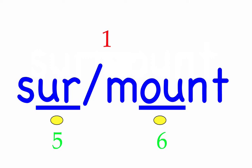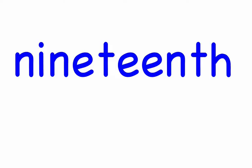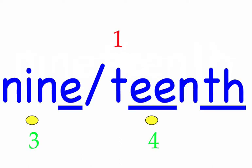Row seven. Nineteenth. Today is the nineteenth. First syllable: nine, three sounds, N-I-N. Second syllable: teenth, four sounds, T-E-N-Th. Nineteenth — mark the word.